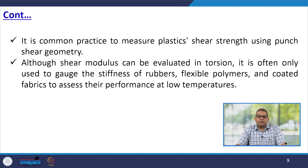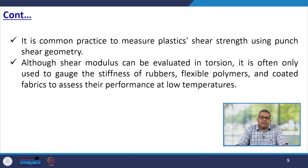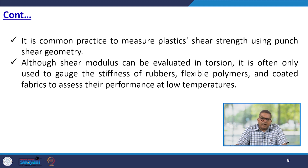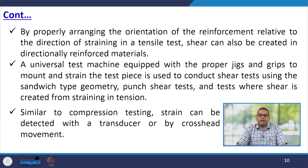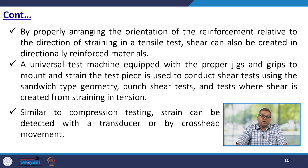It is common practice to measure plastic shear strength using punch or shear geometry. Although shear modulus can be evaluated in torsion, it is often only used to gauge the stiffness of rubber, flexible polymers, and coated fabrics to assess their performance at low temperature. If we properly arrange the orientation of the reinforcement relative to the direction of straining in the tensile test, shear can also be created in directionally reinforced material.